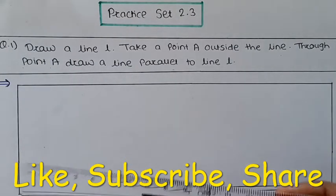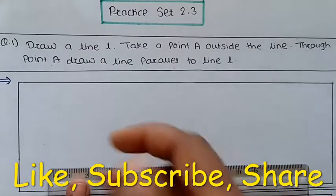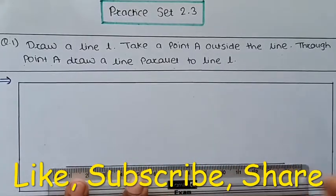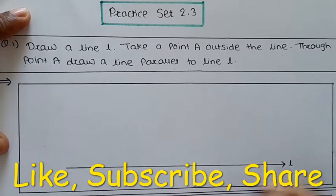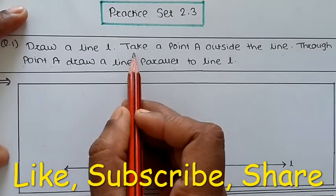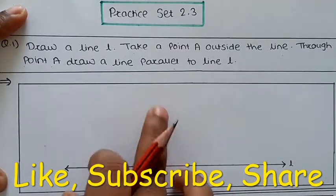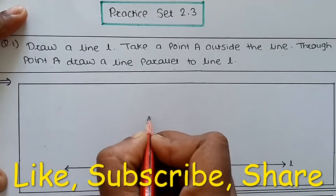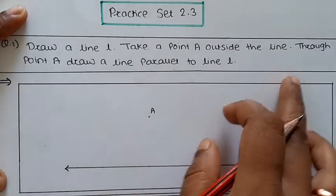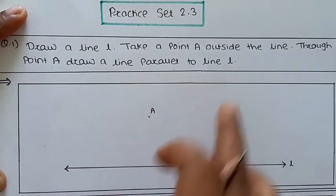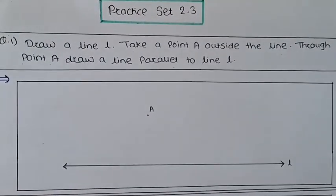So we have to draw one line called line L. Draw one line and name it L. Then take a point A outside the line. We have to take a point — suppose I take this point here — okay, this is point A. Through point A, we have to draw one parallel line.